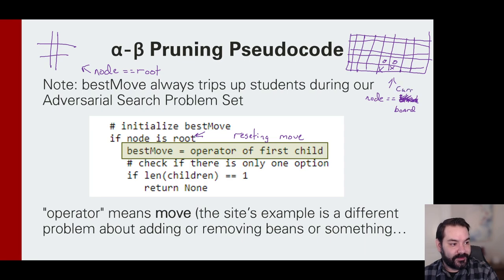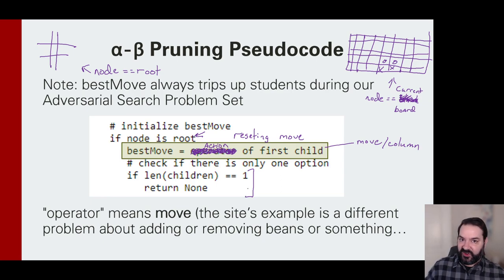Is it equal to what the board currently is? The current board is actually a better notion of what we're looking at here because we're starting off at the very beginning. We're just going to say, what is the first move? Specifically, this is where Swarthmore and my assignment and your assignment may differ because they're using this word operator. Operator's not really the best notion for this. Best action of the first child, the best move. If I was dealing with connect four, that would be our column.